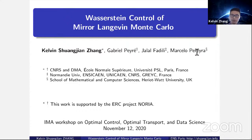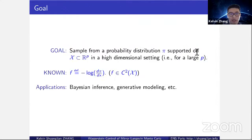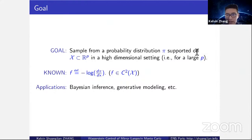Today I'd like to talk about Wasserstein control of mirror Langevin Monte Carlo. This is joint work with my collaborators Gabriel Peyré, Jalal Fadili, and Marcelo Pereyra. This work is supported by the ERC project. This talk will have some relation with optimal transport, though I don't have any equations from optimal control. It falls into the data science and machine learning setting. The goal is to sample from a probability distribution π supported on some subset in R^p, particularly in the high-dimensional setting.